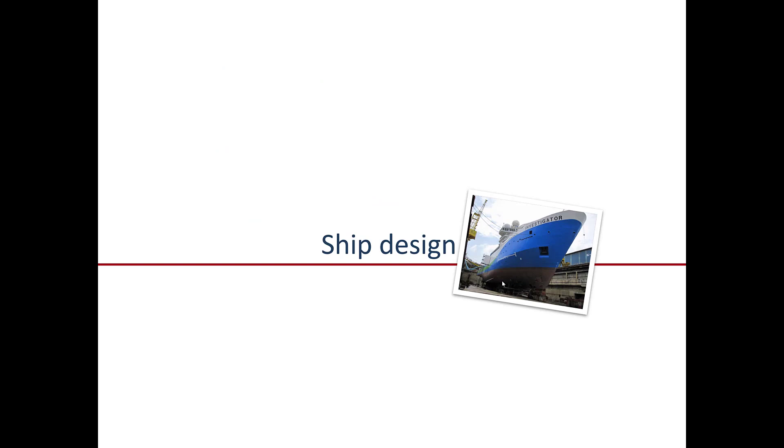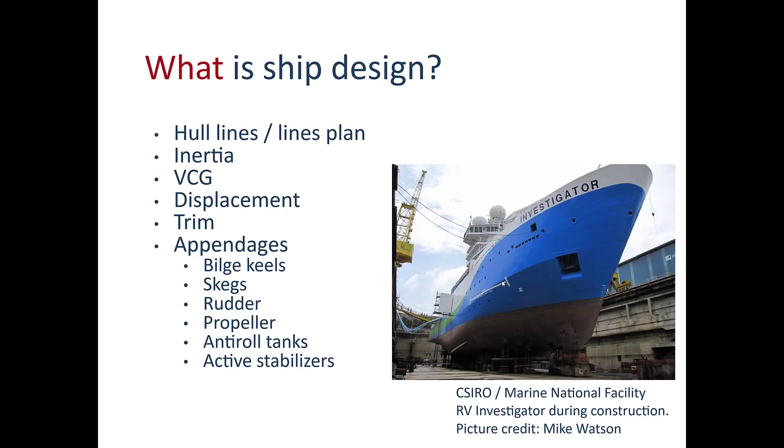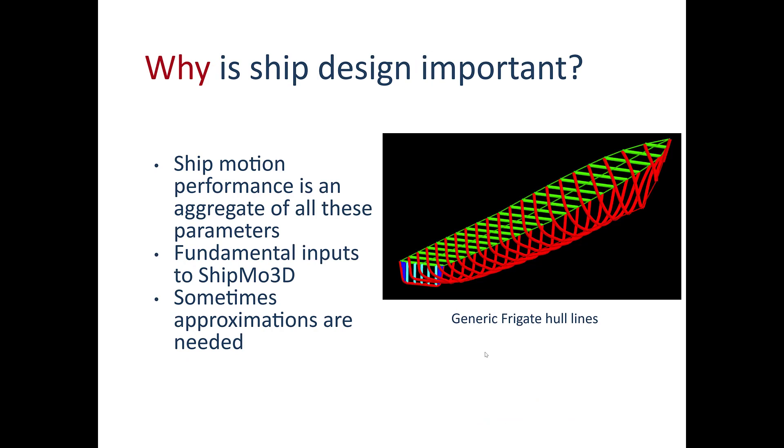Let's talk about the ship design phase. What do we mean by ship design exactly? Well, there's a lot of details like hull lines or you might have this information in a lines plan for the ship. Things like the inertia, the vertical center of gravity, displacement, trim, and a lot of details like the appendages like bilge keels, skags, rudders, propellers, anti-roll tanks, and active stabilizers. Now, you can see in this picture of the research vessel investigator, there's some bilge keels here on the hull.